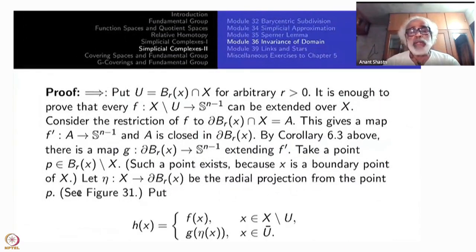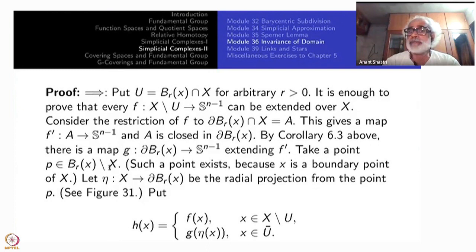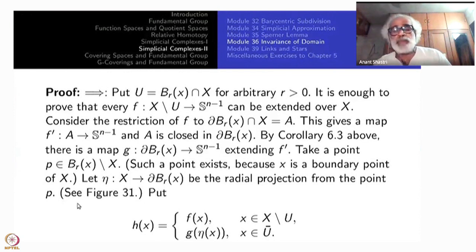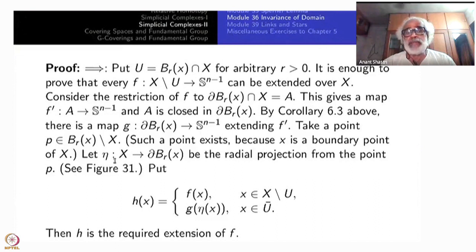Now take a point p in the complement of B_r(x) that is outside X — possible because x is a relative boundary point, so every open set around x intersects both X and its complement. Define eta from X to the boundary of B_r(x) as the radial projection from the point p. Radial projections are defined on the entire of R^n minus {p}: every point has a unique expression in polar coordinates centered at p.